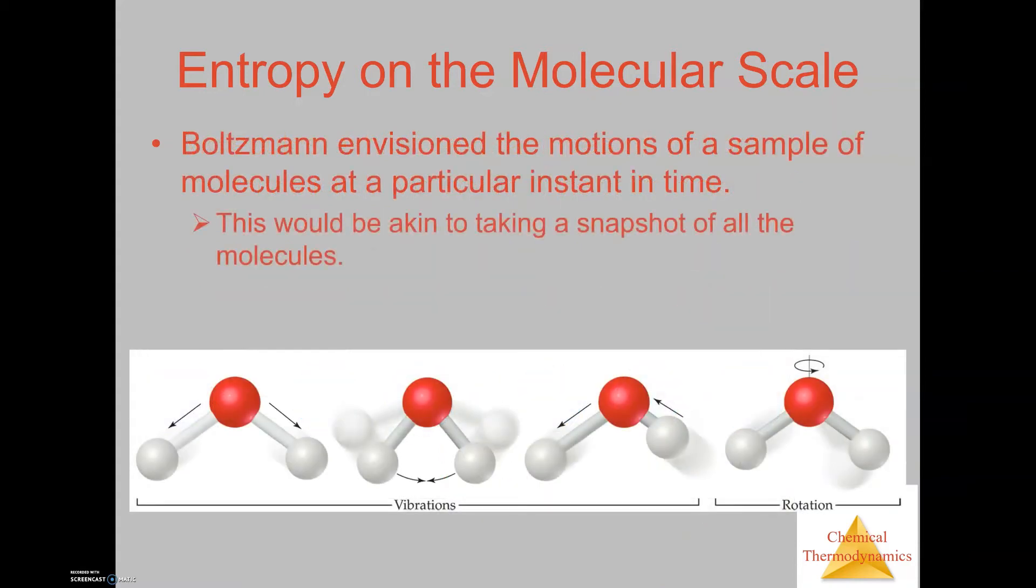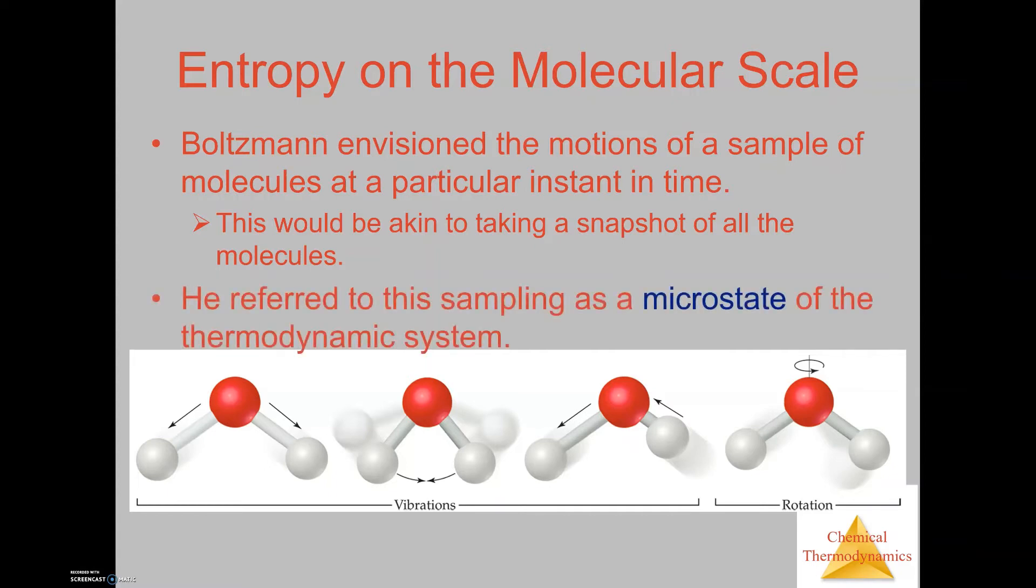One of the things that Boltzmann wanted to do is envision the motions of a sample of molecules at a particular instant in time. It's like taking a snapshot multiple times within a specific time period and looking at how the molecules move throughout space. He referred to this sampling as a microstate of the thermodynamic system.